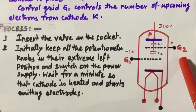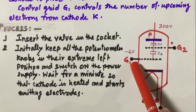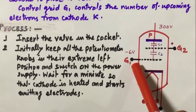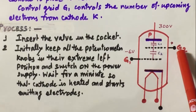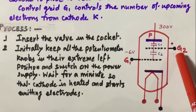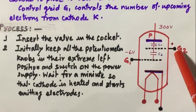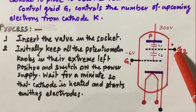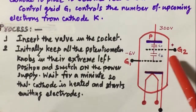If we provide a small negative potential to G1 with respect to the cathode, and provide a large positive potential to the plate — approximately 300 volts — and a positive potential is provided to G2, the reduced capacitance maintains the flow of electrons because the screen grid current reduces the plate current. The screen grid prevents electrons from feeding back from the plate to the cathode. Control grid G1 controls the number of electrons coming from the cathode K.